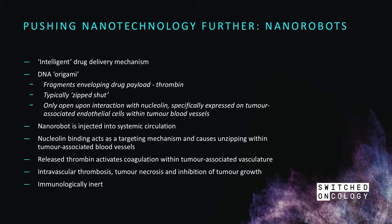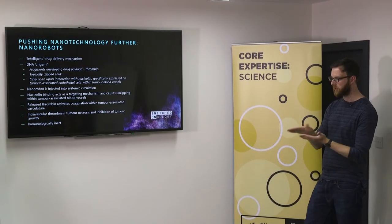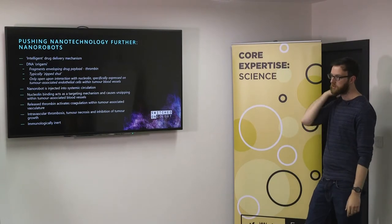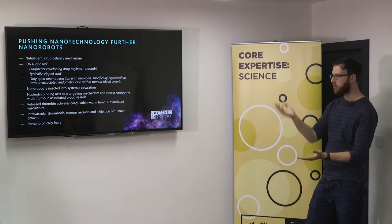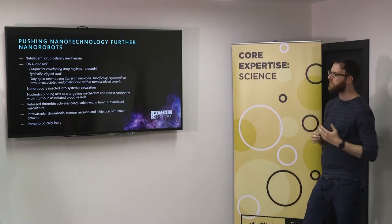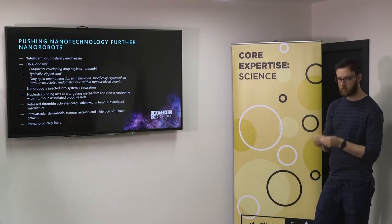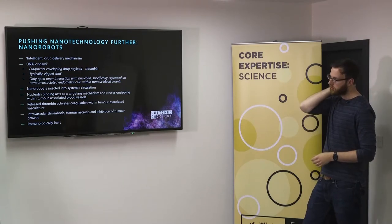Just to finish off this, we're pushing this even further: nanorobots. Yeah, absolutely. This is probably unlikely to reach the clinic in the next 10 years, but we had to include it because it's really exciting. Effectively this is an intelligent drug delivery system. I think the name nanorobot is slightly misleading because it's not a robot, it's not made of metal, it's not machine learning or anything to do with that. It's effectively like a sandwich of two sheets of DNA. The nature paper refers to it as DNA origami. Between those two sheets of DNA is your drug. They used thrombin, which causes blood clots. Once you've got the drug sandwiched between your two sheets of DNA, it's effectively zipped all the way around so the drug can't escape.